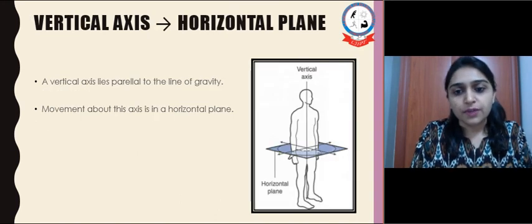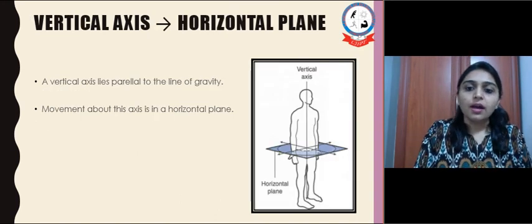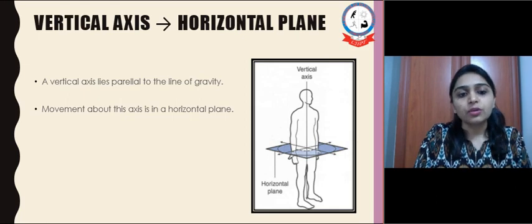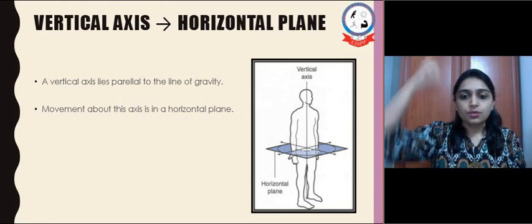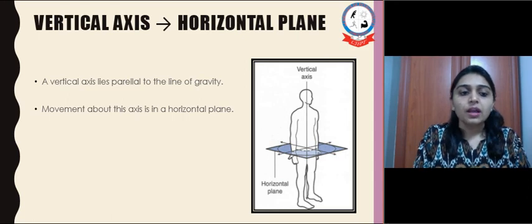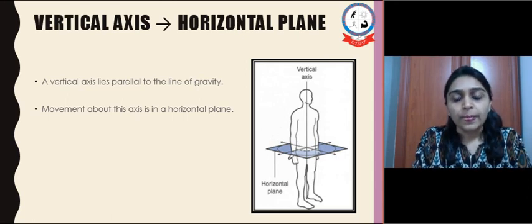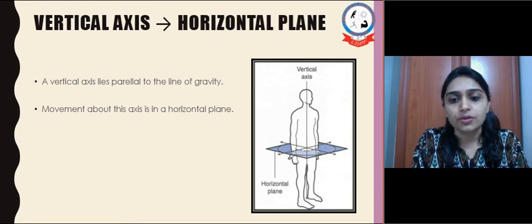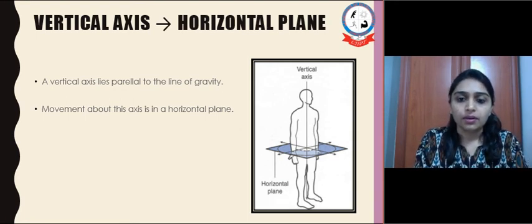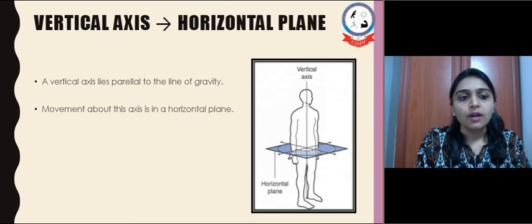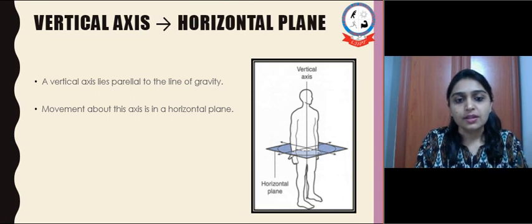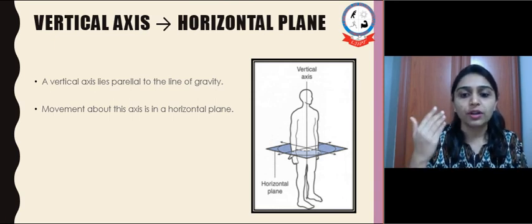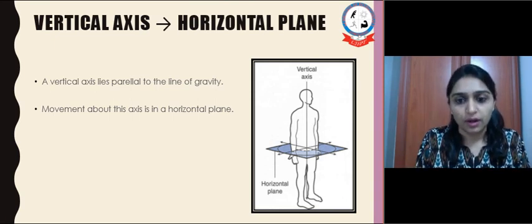Last is the vertical axis. It is parallel to the line of gravity, so it passes from superior to inferior in the body. The movement that takes place in its corresponding plane is the horizontal plane, which is at a right angle to the vertical axis. This horizontal plane divides the body into an upper half and a lower half.